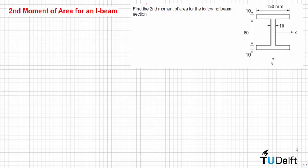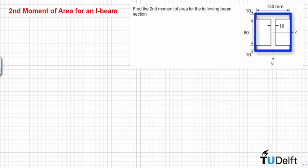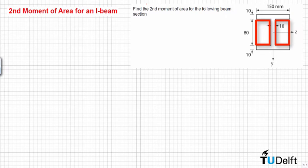In this problem we have to calculate the second moment of area, or moment of inertia, for the following beam section. We can calculate this using different approaches or methods. For example, one approach would be calculating the moment of inertia of a small rectangle containing this section and subtracting the moment of inertia of the hollow part.